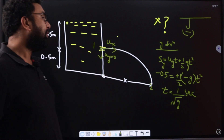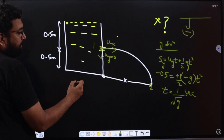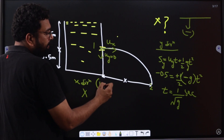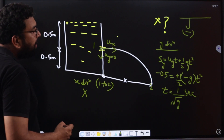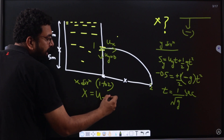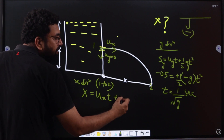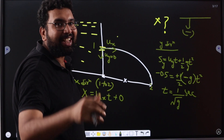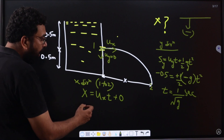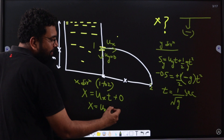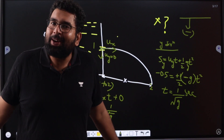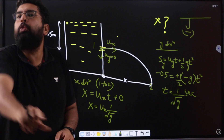Now applying the equation of motion in the x direction between points 1 and 2: the displacement is x, the velocity is ux, and there is no acceleration in the x direction since gravity acts only in the y direction. So x = ux·t = ux·(1/√g). If we can find ux, the answer is sorted. All we require from the given information is ux — we will get that from the Bernoulli equation.